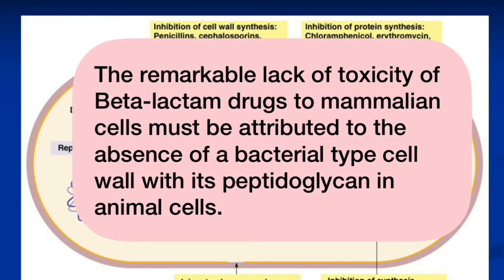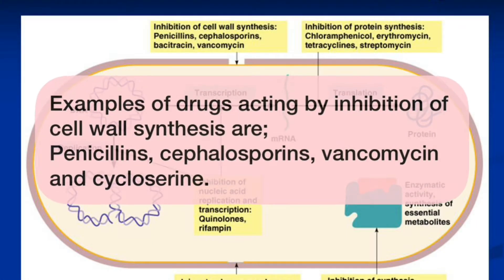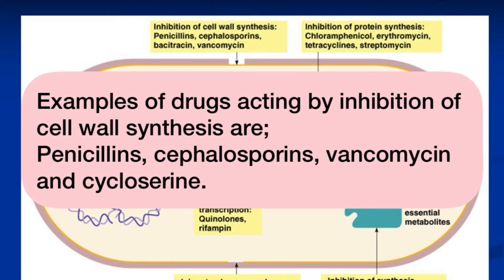The remarkable lack of toxicity of beta-lactam drugs to mammalian cells is due to the fact that mammalian cells don't have the bacterial type cell wall with its peptidoglycan. The difference in susceptibility of gram-positive and gram-negative bacteria to various penicillins or cephalosporins probably depends on structural differences in their cell walls, such as the amount of peptidoglycan and presence of receptors that determine penetration, binding, and activity of drugs. Examples of drugs acting by inhibition of cell wall synthesis are penicillins, cephalosporins, vancomycin, and cycloserine.